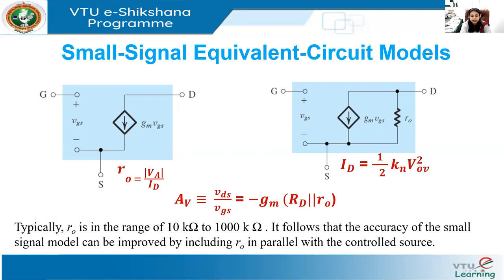The DC voltage source is replaced by a short circuit because the voltage across an ideal constant DC voltage source does not change, so there is always zero voltage signal across it. As a dual statement, the signal current of an ideal constant DC current source will always be zero, and thus the ideal constant DC current source can be replaced by an open circuit in the small signal equivalent circuit of the amplifier.